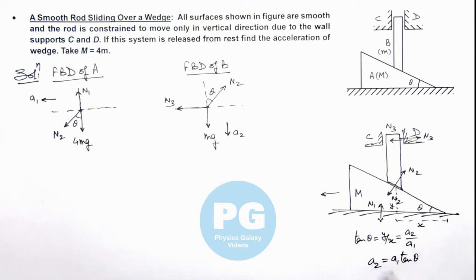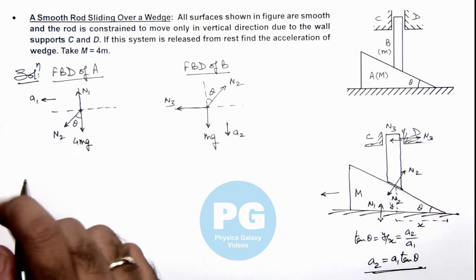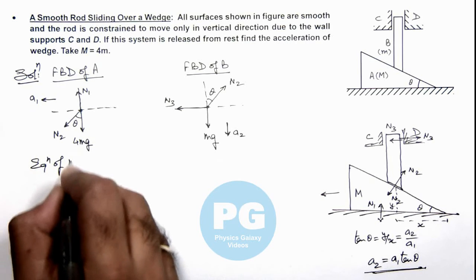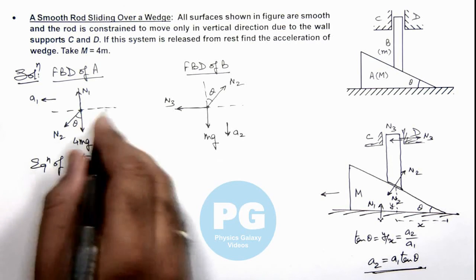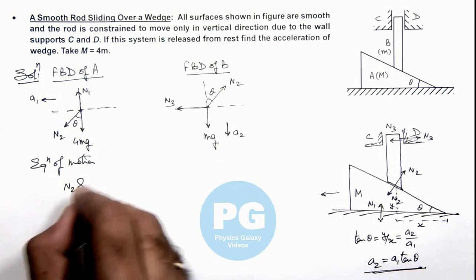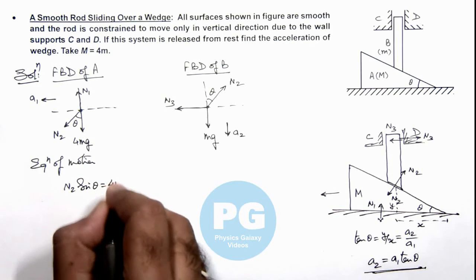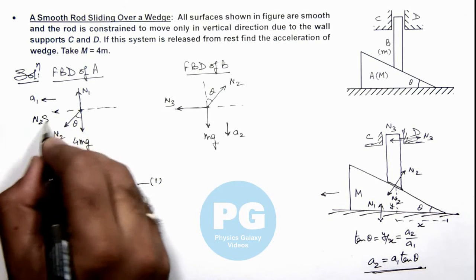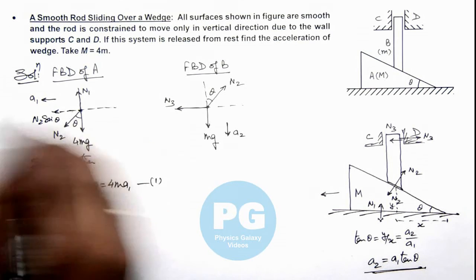This is the relation we are going to use in equations of these bodies. So if we write equation of motion for leftward motion of wedge, here we can write the equation as N2 sin theta is equal to 4m a1, that is equation 1. As only due to N2 sin theta this wedge will move toward left.